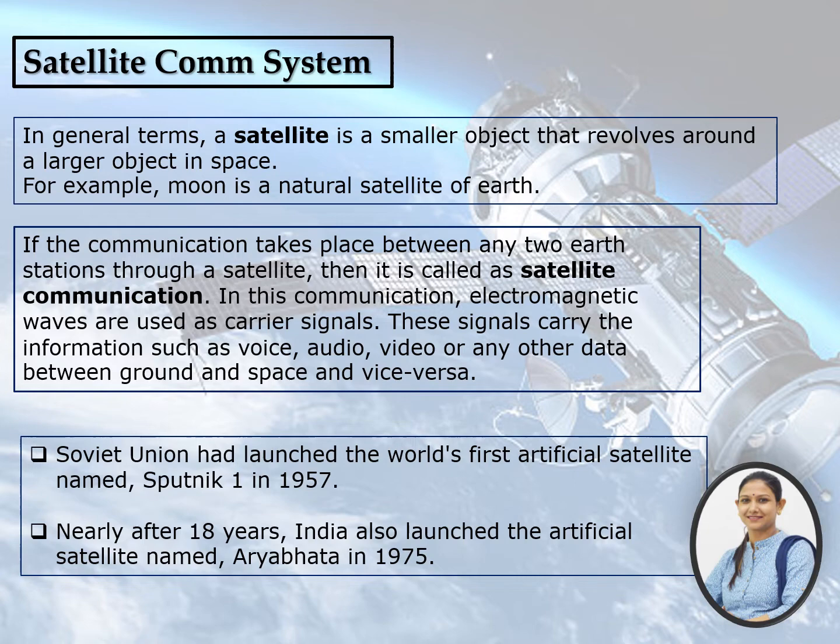Now we see what is a satellite. In general terms, a satellite is a smaller object that revolves around a larger object in space. For example, the moon is a natural satellite of Earth, and Earth itself is an example of a natural satellite.